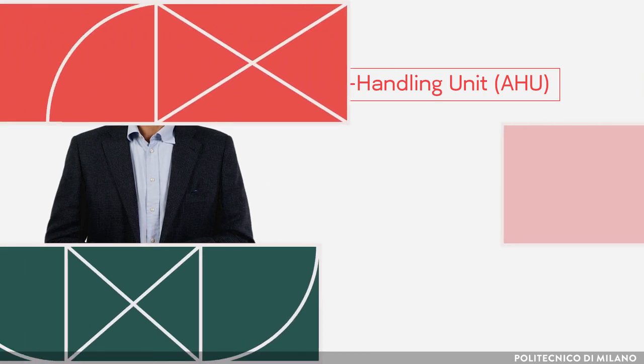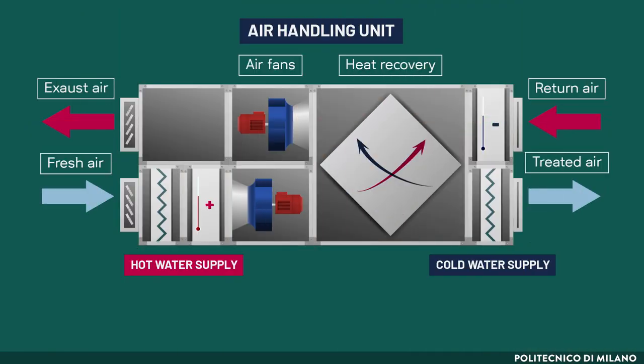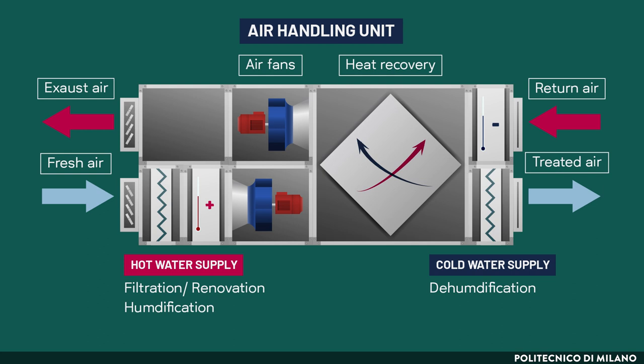In the case of all-air or air-water systems, the generation subsystem includes the air handling unit. The air handling unit manages a series of operations upon the air before it is distributed: filtration, renovation, humidification and dehumidification, heating, cooling, and heat recovery. To pursue these tasks, it requires hot or cold water or, alternatively, a refrigerant coming from the generation subsystem.